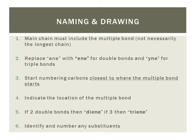Now the root of your name is going to indicate the number of carbons, just like it did with alkanes, but when you're naming compounds with double bonds or triple bonds, you're going to use ene to indicate an alkene, which contains a double bond, and yne to indicate an alkyne, which contains triple bonds.